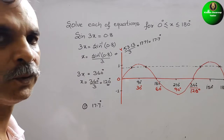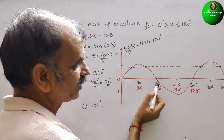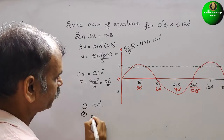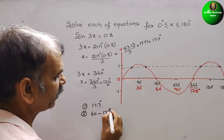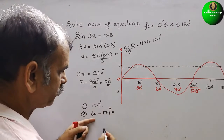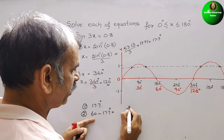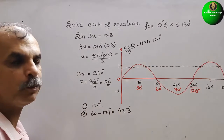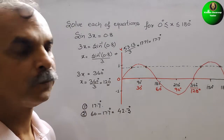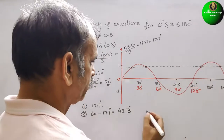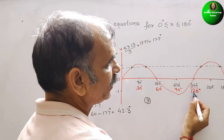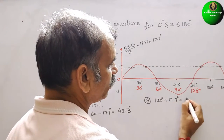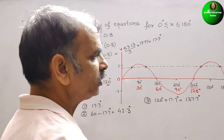The second solution is 60° minus 17.7°. Calculating: 60 - 17.7 = 42.3 degrees. So the second solution is 42.3°. The third solution is 120° plus 17.7°, which equals 137.7 degrees. That is the third solution.